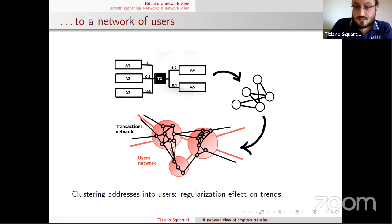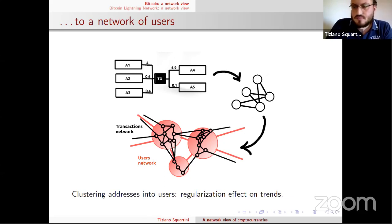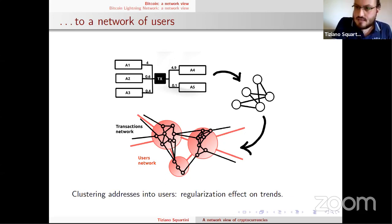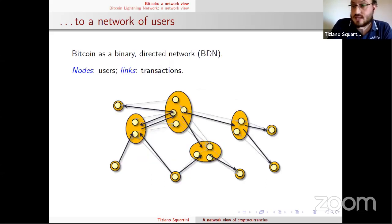For this work, we use the multi-input and the change-address heuristics. Briefly: the multi-input heuristic is based on the observation that if many addresses appear in the inputs of a transaction, they are likely to belong to the same user. Similarly, the change address — when one cannot transfer precisely the desired amount of bitcoin, they send the change back to themselves — is also likely to belong to the same user initiating the transaction.